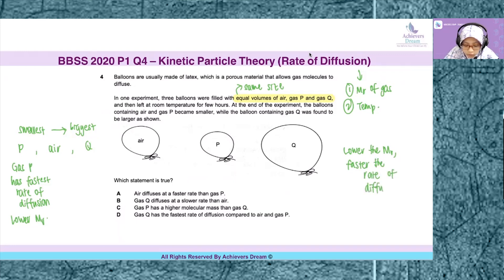So on the other end, balloon Q is having the biggest size after the experiment. And this means that Q has the slowest rate of diffusion, thus the relationship is inverse. It has the highest molecular mass, highest MR.